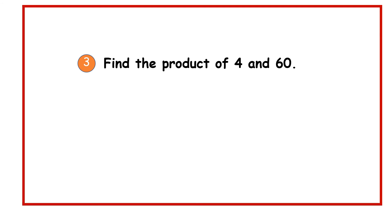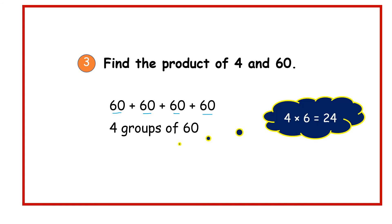In part 3, we need to find the product of 4 and 60. This means we have 4 groups of 60 — that is 60 plus 60 plus 60 plus 60. We get 4 times 60 by first computing 4 times 6, which is equal to 24, and then writing a 0 in the ones place to get 240.